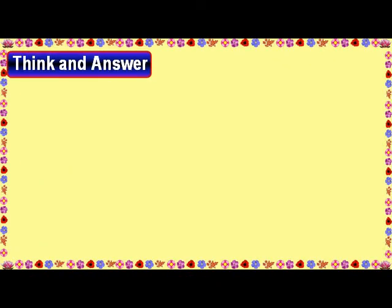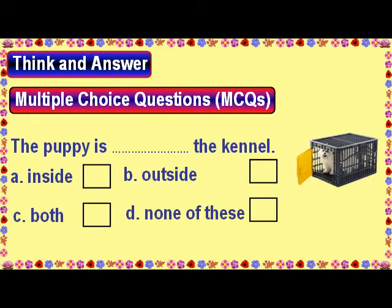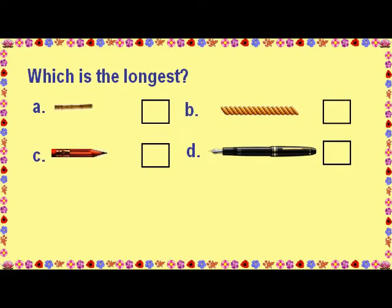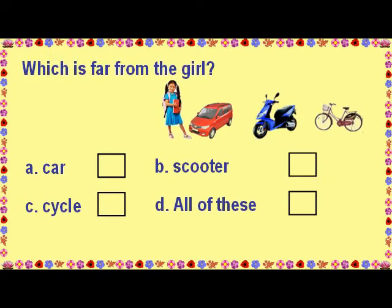Think and answer. Multiple choice questions. The puppy is inside the kennel. Which is the heaviest? The watermelon is the heaviest. Which is the longest? The pen is the longest. Which is far from the girl? The cycle is far from the girl.